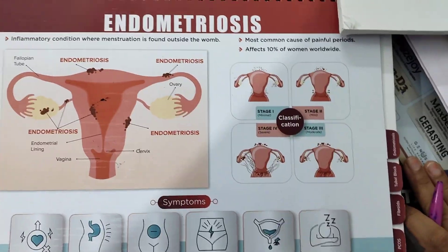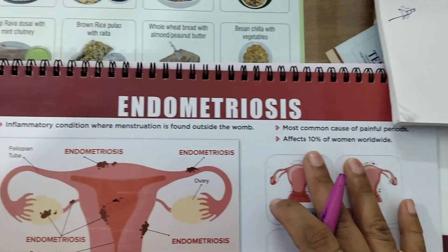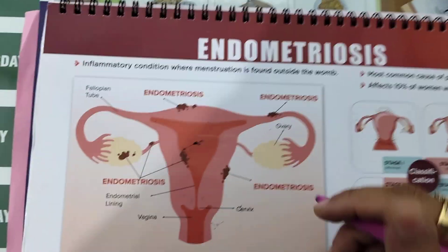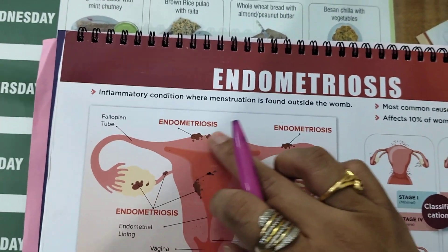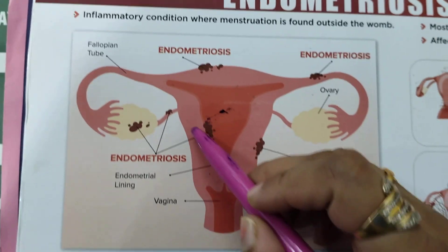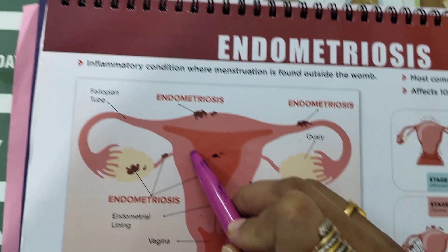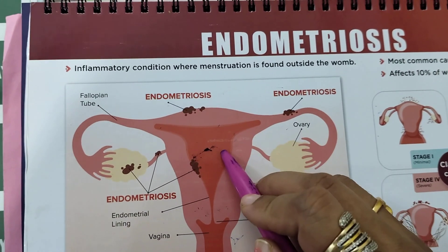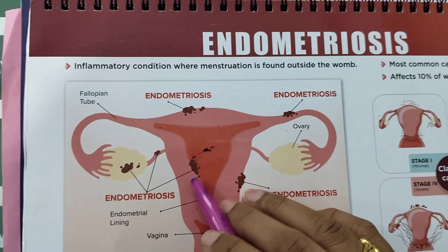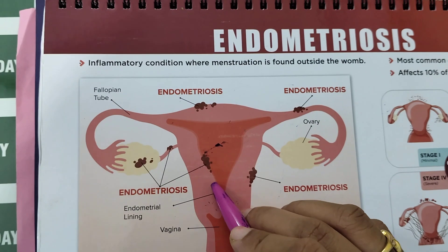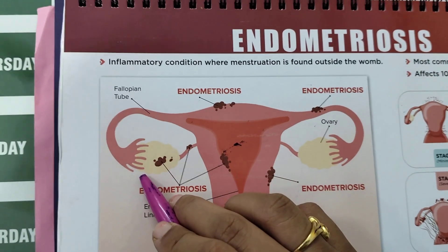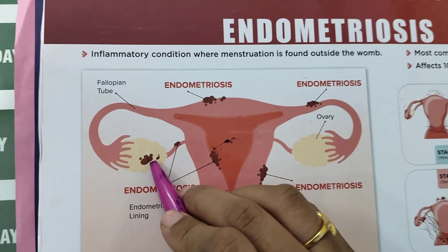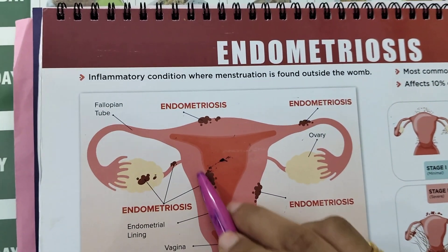Today I'm going to discuss endometriosis. Endometriosis is basically an inflammatory condition where the menstruation is found outside the womb. This is a uterus, and the lining of the uterus is called the endometrium tissue. When this endometrium lining is implanted outside the uterus for various reasons, that situation is called endometriosis. When the patient is having her periods, this lining located outside the uterus — for example in the ovaries — causes bleeding or severe pain in that area.